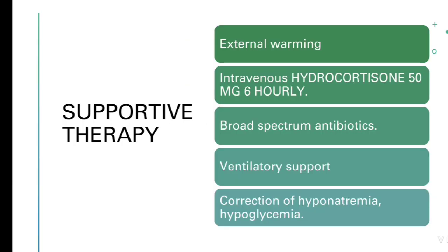Along with T3 or T4, we have to give supportive therapy. Because the patient presents with hypothermia, we have to give external warming. We can give IV hydrocortisone 50 mg 6-hourly. We have to give broad-spectrum antibiotics to prevent sepsis. We can also give ventilatory support if vitals are deranged and the patient presents with hypoventilation. We have to correct hyponatremia, hypoglycemia, and other abnormalities.